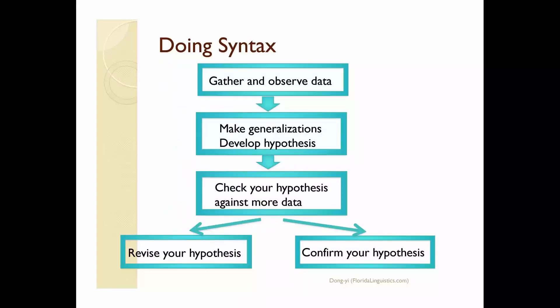This diagram shows the basic procedure for how linguists conduct syntactic research. First, we gather and observe linguistic data — in most cases, a list of grammatical and ungrammatical sentences. Based on these sentences, we make generalizations and develop hypotheses that can account for the syntactic pattern exhibited by the data. The next step is to check this hypothesis against more data. Our hypothesis is confirmed if it can account for the new data. If it fails, we revise our hypothesis so that it can explain the new data as well.